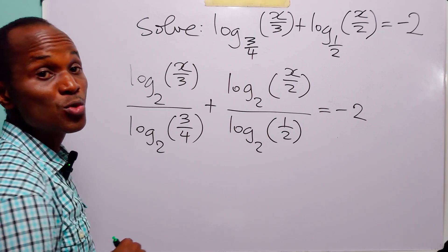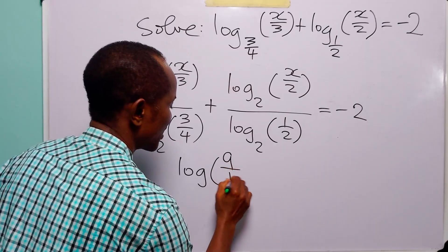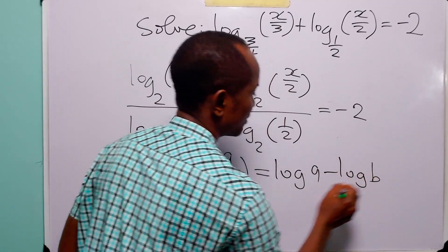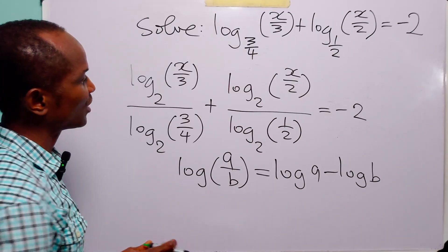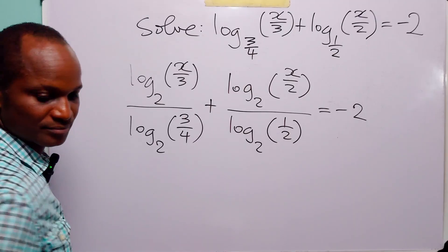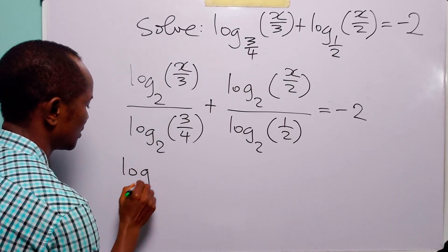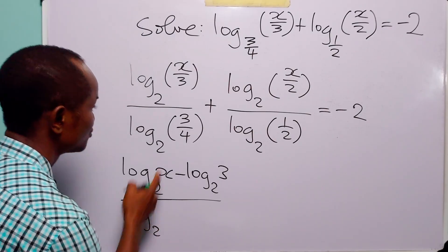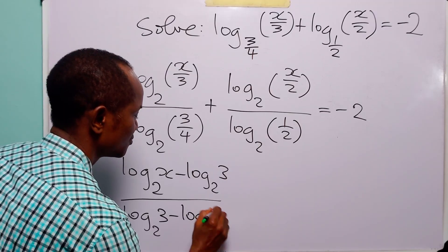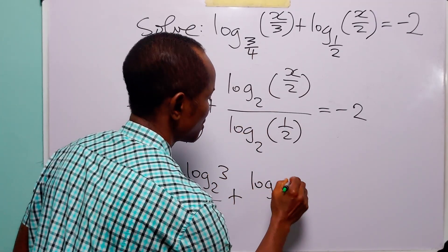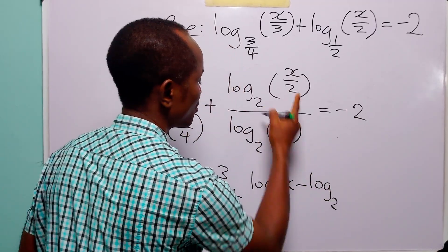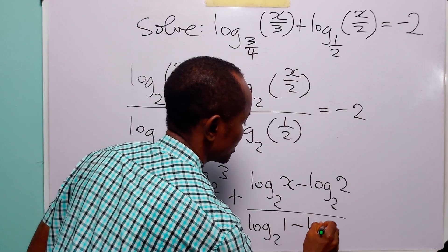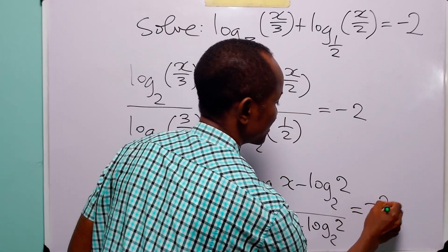Now, let us remember the rule of logarithms that says that log(a/b) can be written as log a minus log b. With this rule in mind, we are going to further simplify the left-hand side of this equation. So here we have: log base 2 of x minus log base 2 of 3, over log base 2 of 3 minus log base 2 of 4; plus log base 2 of x minus log base 2 of 2, over log base 2 of 1 minus log base 2 of 2. And this remains equal to minus 2.